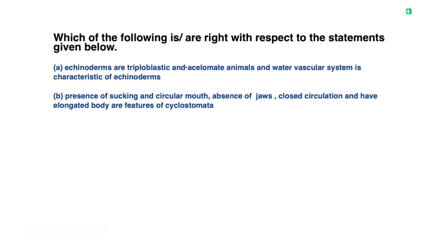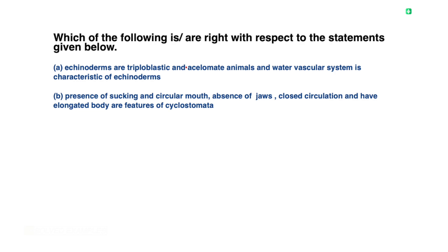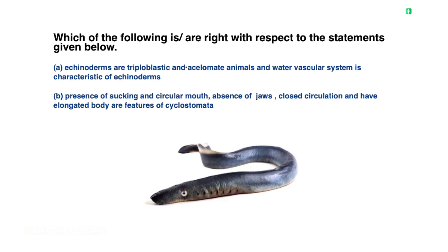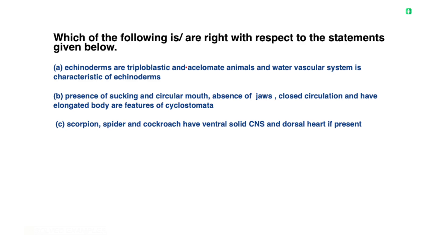Statement 2: Presence of sucking and circular mouth, absence of jaws, closed circulation, and an elongated body are features of Cyclostomata. Analyzing this — they do have an elongated body. However, the second statement is wrong.